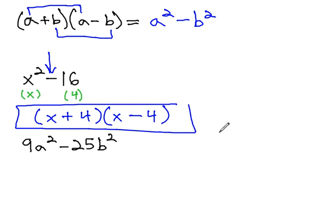Again, consider 9a squared minus 25b squared. Again, we are subtracting—the subtracting's important—two things we can take the square root of. For example, the square root of 9a squared is 3a. The square root of 25b squared is 5b.